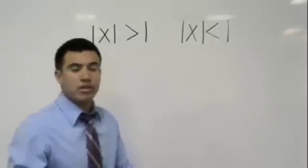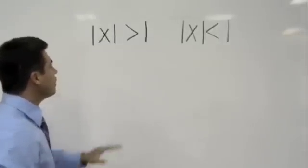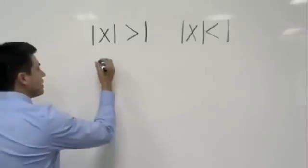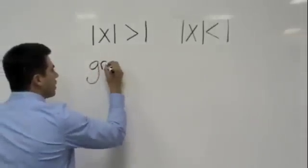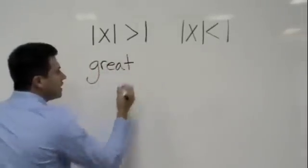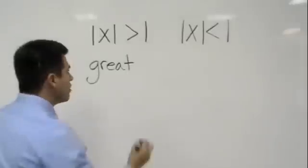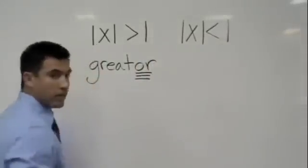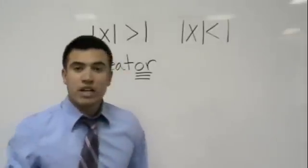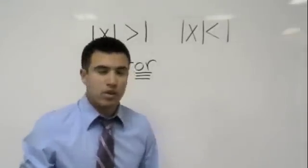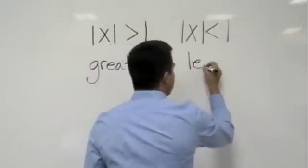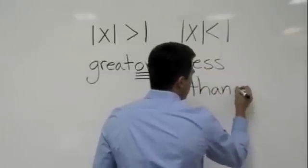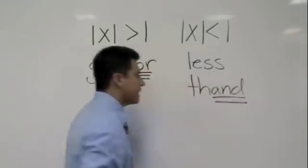Here are two things I want you to remember, so write this down. Whenever we read something as 'the absolute value is greater,' write the word 'great' and instead of spelling it 'greater' with an 'er,' put 'great-or' and underline that 'or.' And when it says the absolute value of x is less than 1, write 'less-and' — putting a 'd' at the end.